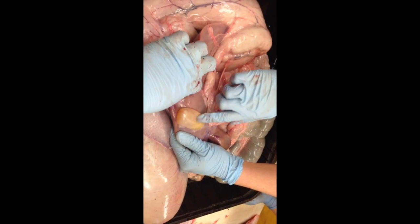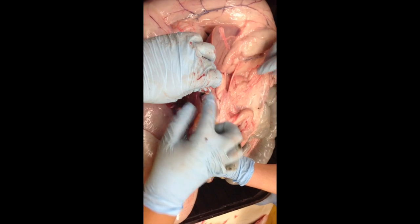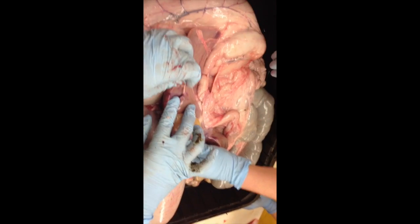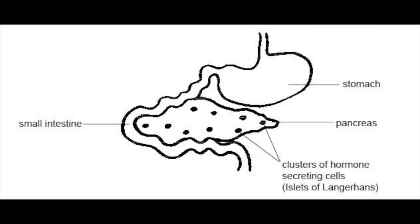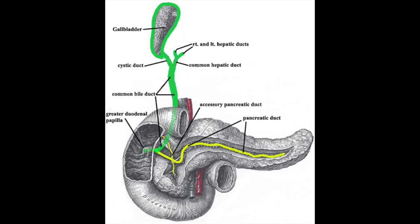The liver secretes bile. The gallbladder stores, concentrates, and secretes bile by way of contraction, stimulated by cholecystokinin. The pancreas — specifically the pancreatic islets — secretes insulin, glucagon, and pancreatic polypeptide. The hepatic duct, cystic duct, common bile duct (choledochus duct), main pancreatic duct (duct of Wirsung), accessory pancreatic duct (duct of Santorini), and then the ampulla of Vater and the sphincter of Oddi are the associated ductal structures.